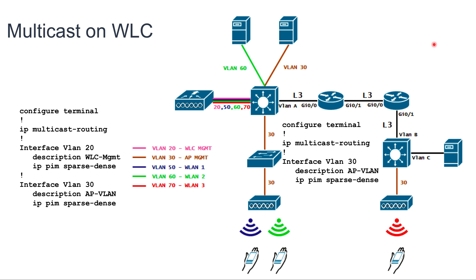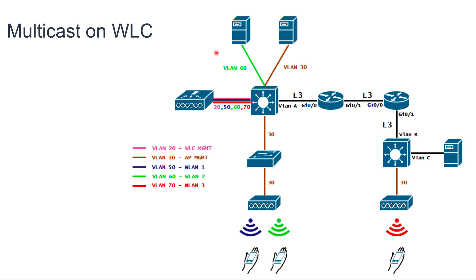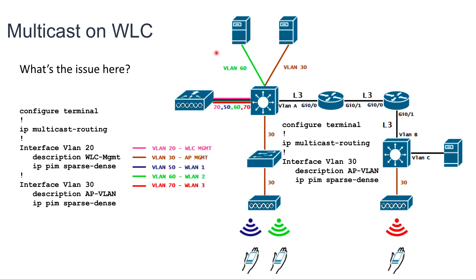Once we do this on the remote side, we'll configure VLAN 30 and enable Multicast routing as well, which is the access point VLAN. The issue is that Multicast traffic is configured between the controller management VLAN and the access point management VLAN locally, but we're missing all this part for the remote side. So if you have a scenario like this, you may receive Multicast traffic on only a few access points — only the access points on the local side instead of the remote side. That would be the kind of symptom indicating this is the issue.